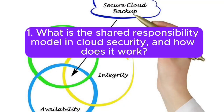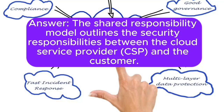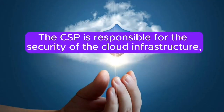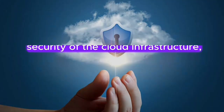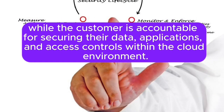1. What is the shared responsibility model in cloud security, and how does it work? The shared responsibility model outlines the security responsibilities between the cloud service provider (CSP) and the customer. The CSP is responsible for the security of the cloud infrastructure, while the customer is accountable for securing their data, applications, and access controls within the cloud environment.